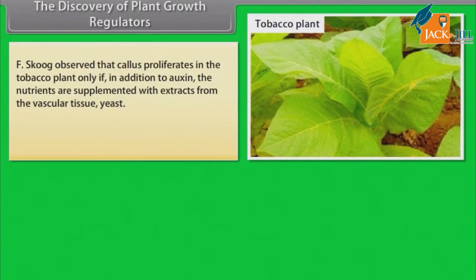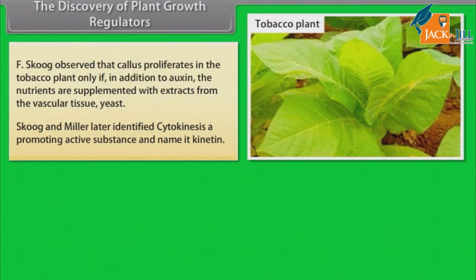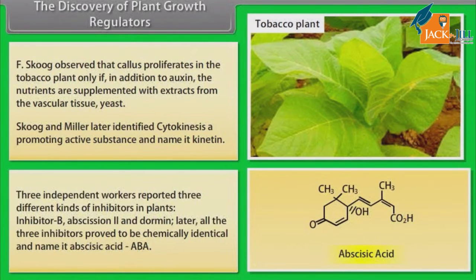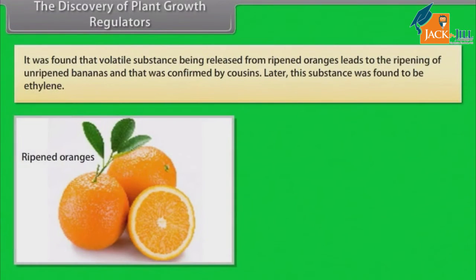F. Skoog observed that callus proliferates in the tobacco plant only if, in addition to auxin, nutrients are supplemented with extracts from the vascular tissue or yeast. Skoog and Miller later identified a cell-division-promoting active substance and named it kinetin. Three independent workers reported three different kinds of inhibitors in plants — Inhibitor B, abscission 2, and dormin. Later, all three inhibitors proved to be chemically identical and were named abscisic acid (ABA). It was found that a volatile substance released from ripened oranges leads to the ripening of unripened bananas, confirmed by Cousins; later this substance was found to be ethylene.